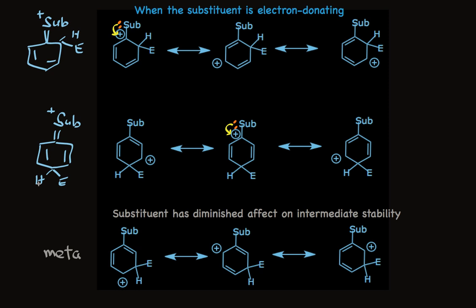For meta substitution, that fourth resonance form isn't possible, and the stabilizing effect is seriously diminished because the substituent isn't attached to the carbon bearing a positive charge. The take-home is: when the substituent is electron-donating, it directs substitution to the ortho and para positions. Note that both ortho and para products are formed in significant amounts, though the ratios may vary from compound to compound.